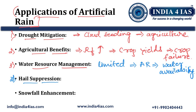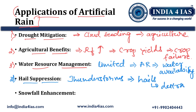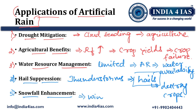The fourth major application is hail suppression. During thunderstorms, there are heavy chances of hail formation, which destroys standing crops. The cloud seeding technique is used to reduce the formation of hails. The fifth application is snowfall enhancement — in mountainous regions, cloud seeding is used to increase snowfall, which is crucial for winter tourism, as tourists will not visit if there is no snowfall.